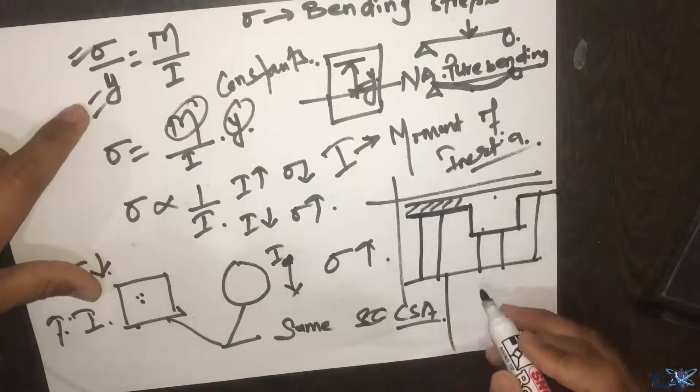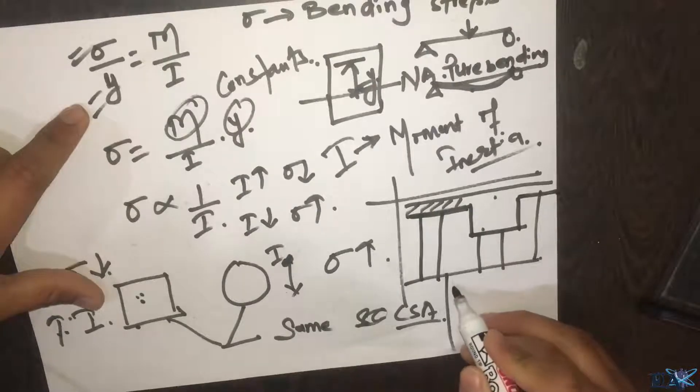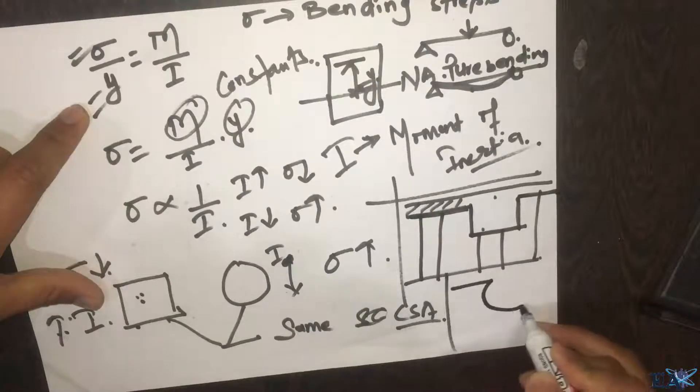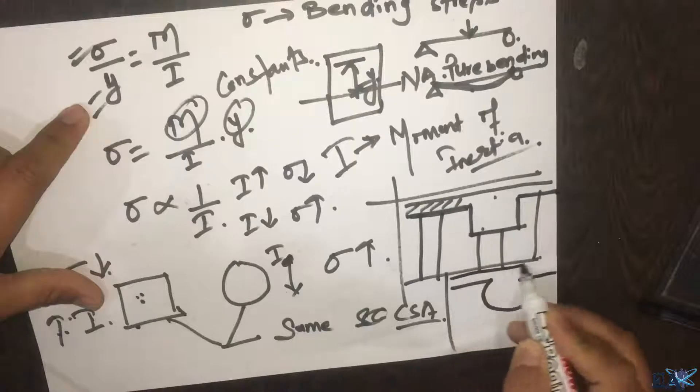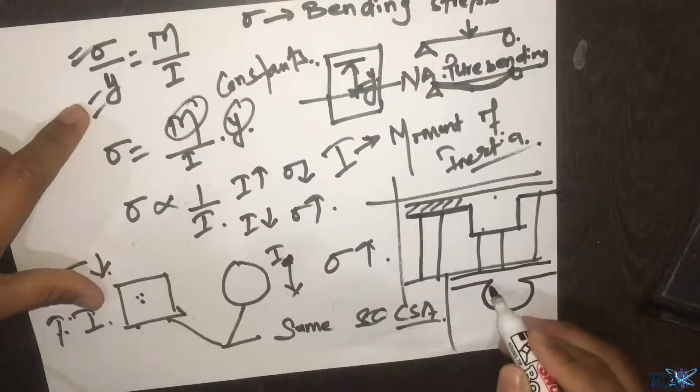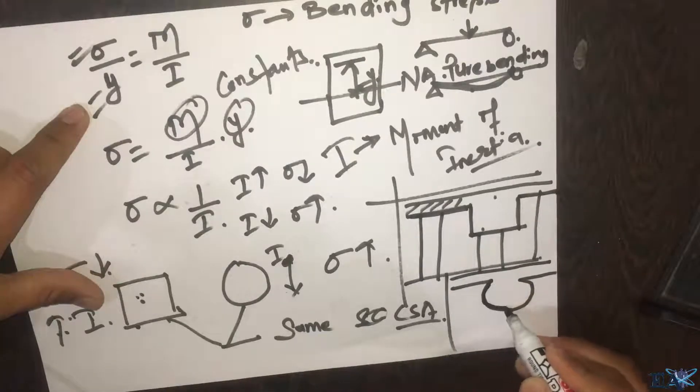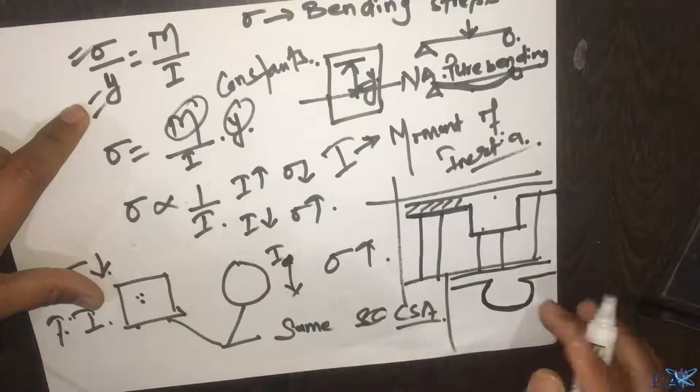If you have a circular section instead of this rectangular section, you have to make something like this - a circular section. To make this section like this, it's very hard and very tough to cast these kinds of beams.